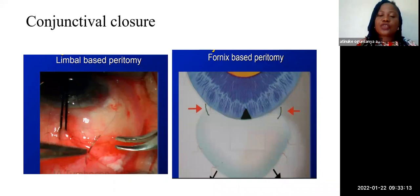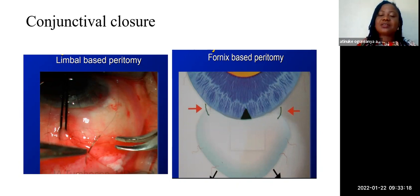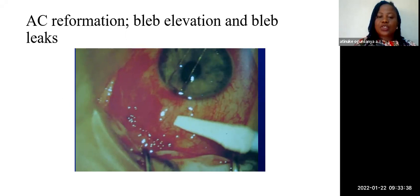If watertight conjunctival closure is not done, the risk of returning to theatre, the risk of blebitis, and the risk of endophthalmitis for the patient are very high. After closure, through the paracentesis that has been created, the anterior chamber is reformed, and the bleb is elevated while the anterior chamber is reformed with saline. You look at the bleb to confirm it is elevated — this is intra-operative confirmation that the bleb is functioning. You also look for bleb leak so that any leak detected intra-operatively can be repaired immediately.